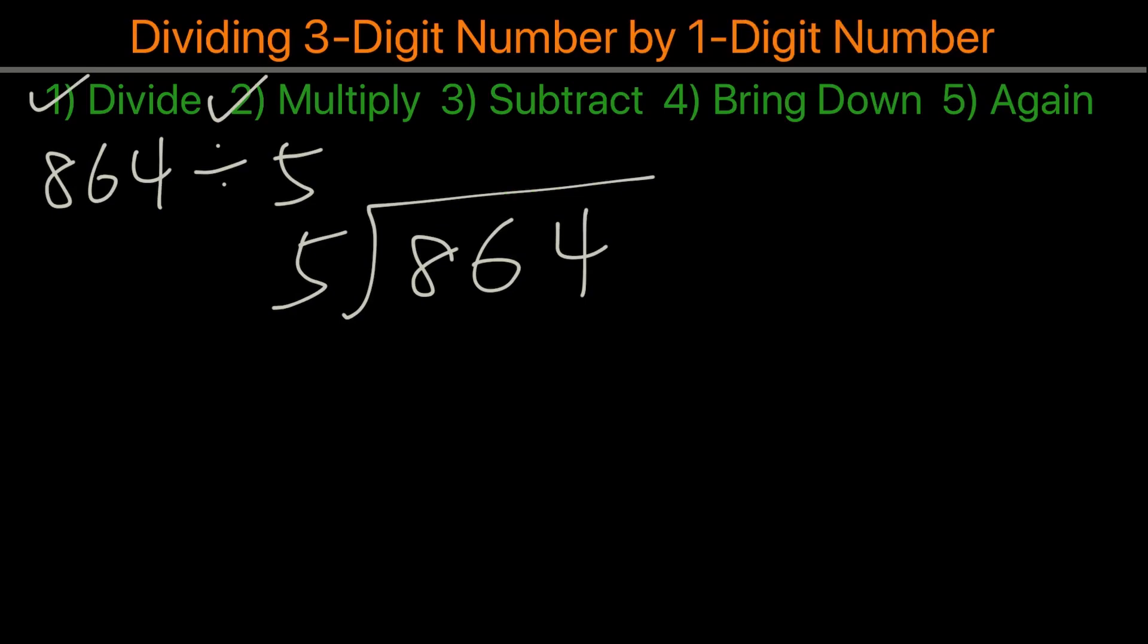We'll compare each number. In this case, the first number is 8, and we'll divide that by 5. We can see 1 times 5 will give us 5 here. The next step will be to subtract. So we will minus 5 from 8, and we will get 3.